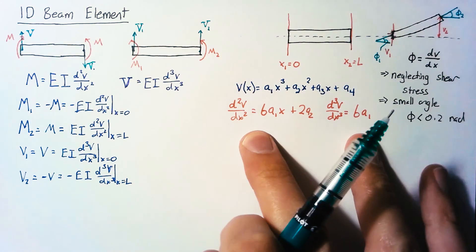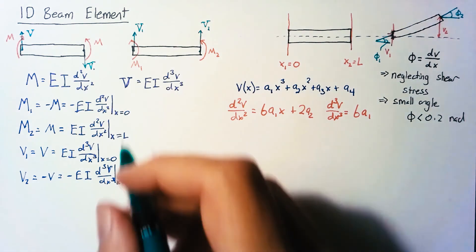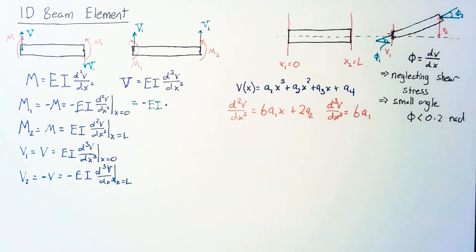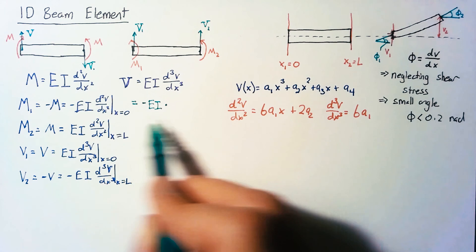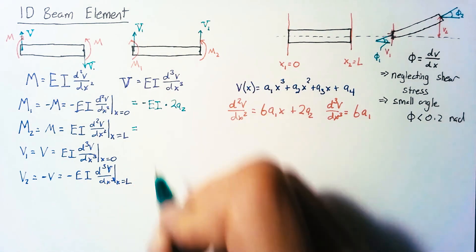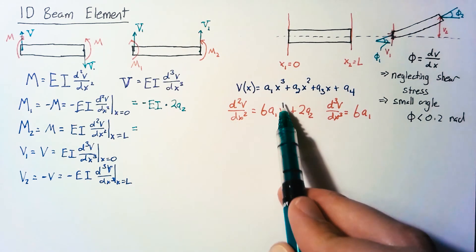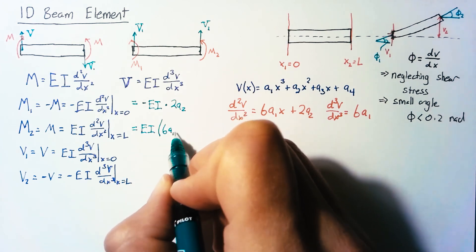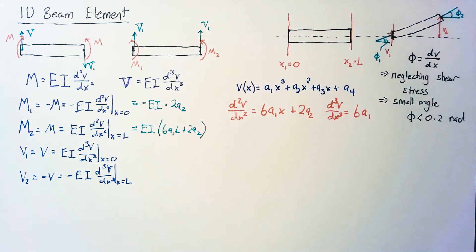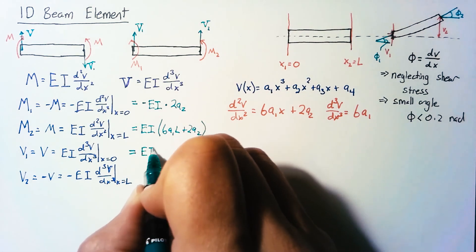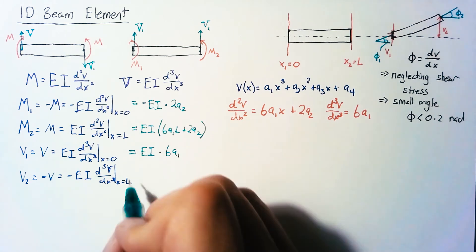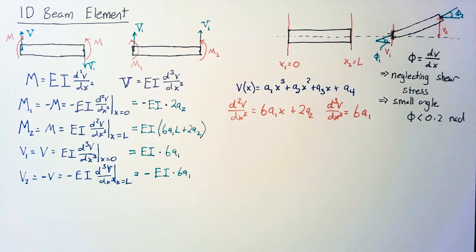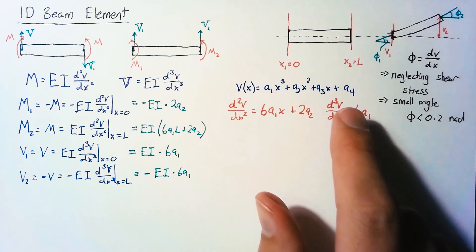Using these two expressions, we can evaluate the four components of our force vector. M1 becomes negative EI multiplied by 2 times a2, because x equals 0 so the first term drops off. M2 becomes positive EI times (6a1l plus 2a2). For v1 we have positive EI times 6a1, and for v2 we have negative EI times 6a1. So we have everything in terms of the coefficients of our cubic polynomial.